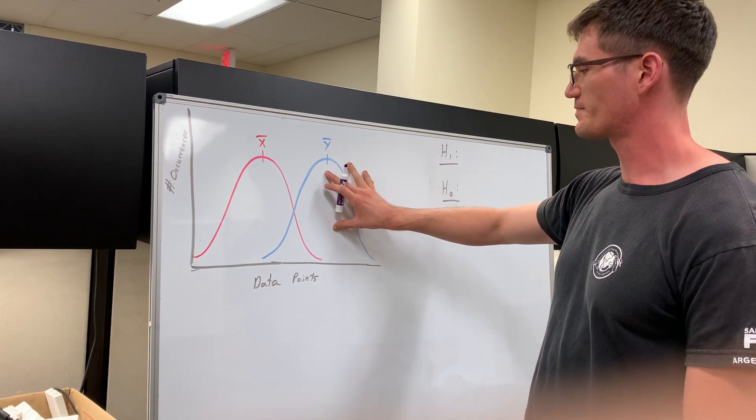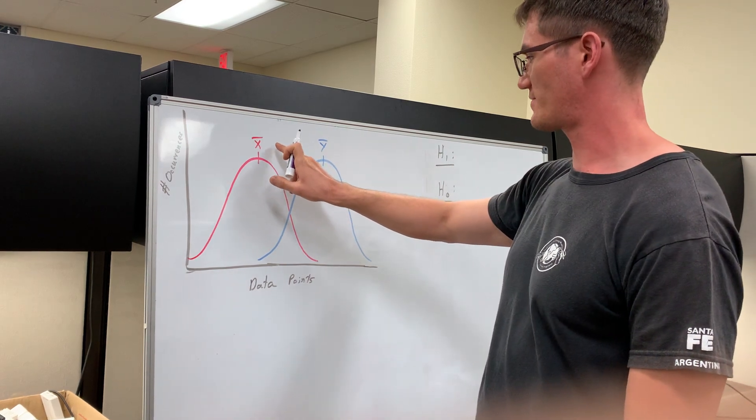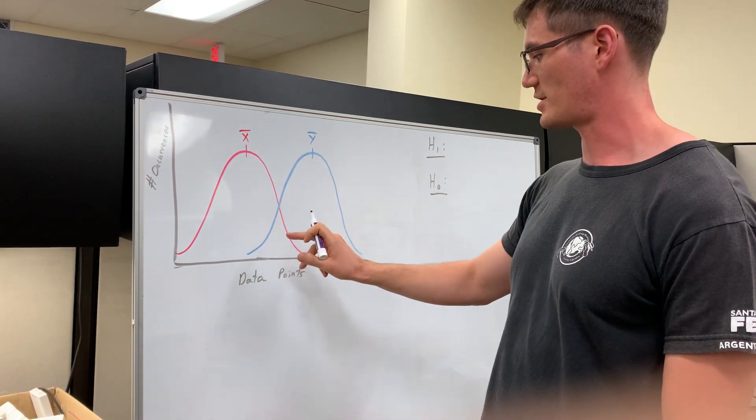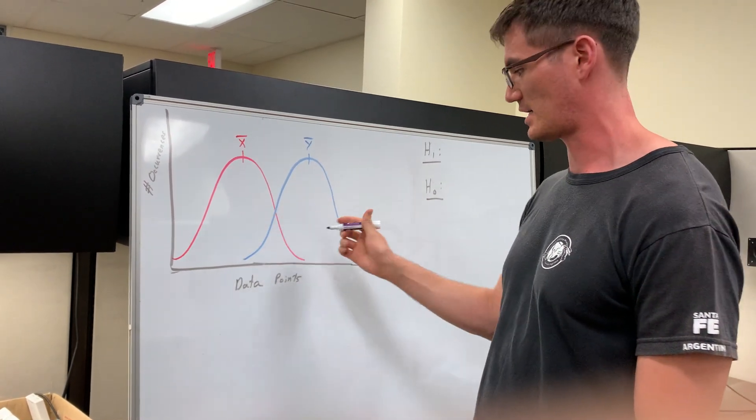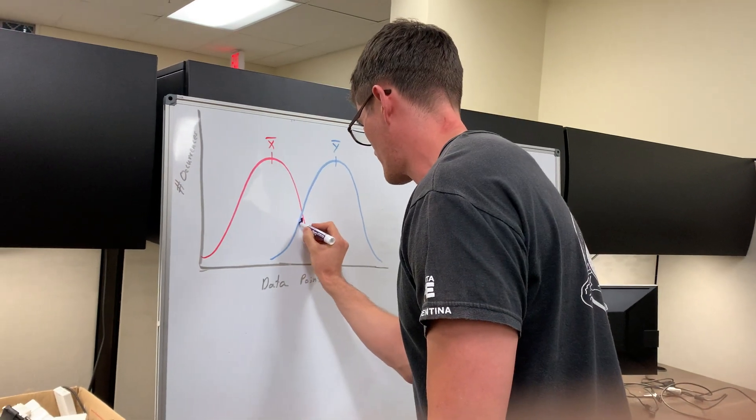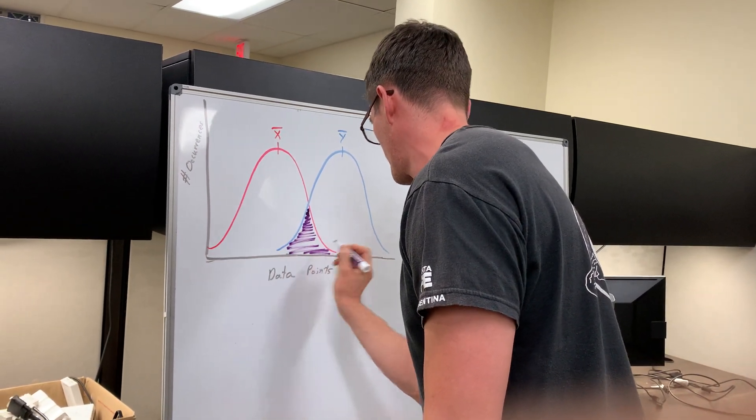So basically what the t test is trying to do is not only is it trying to measure the difference in means, it's also trying to measure the amount of overlap between both of these data sets. And the overlap is this portion right here.